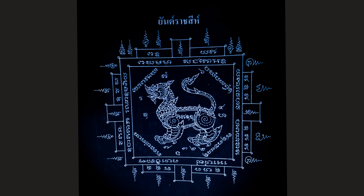Yan Rajasi, or Yan Priya Rajasi, is a very famous yantra seen on many coin amulets and powder amulets — a very powerful incantation used by people with amulets or sak yant tattoos of the Rajasi lion. The Rajasi is the king Himapan lion of the Himapan forest of Vedic legend, Thai mythology, Buddhist and Brahman mythology.